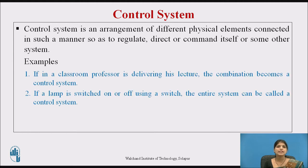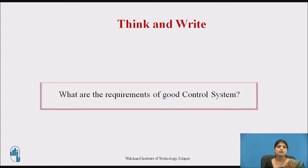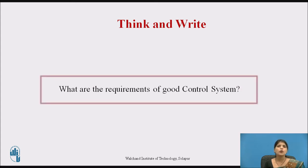Let us consider examples of a control system. First, if in a classroom a professor is delivering a lecture, the combination becomes a control system, as he or she tries to regulate and command the students in order to achieve the objective of imparting good knowledge. The second example is a lamp — a lamp with a switch is nothing but a control system. Now, pause this video for a few seconds and think about and write down the requirements of a good control system.